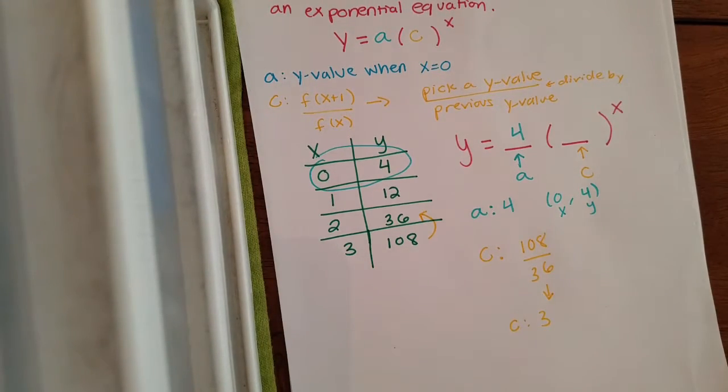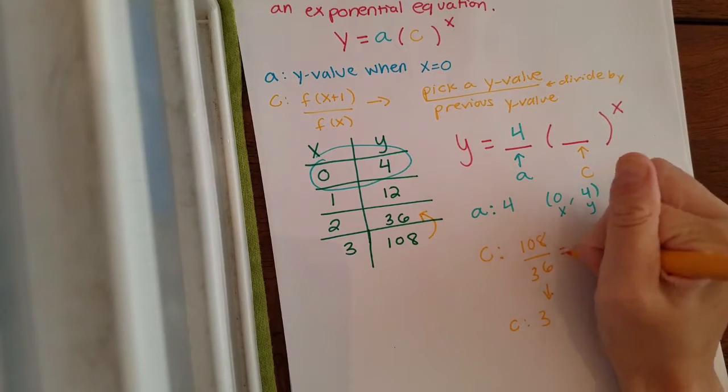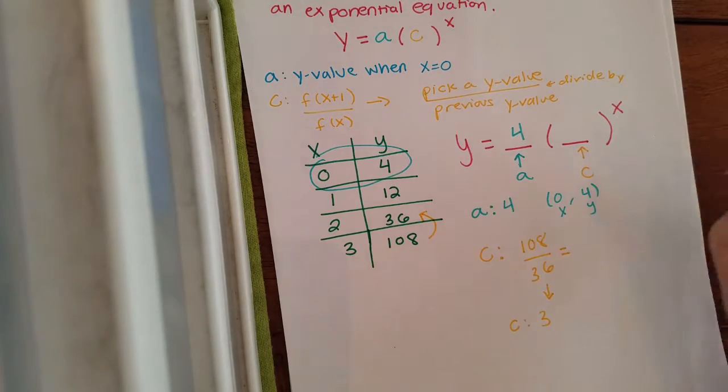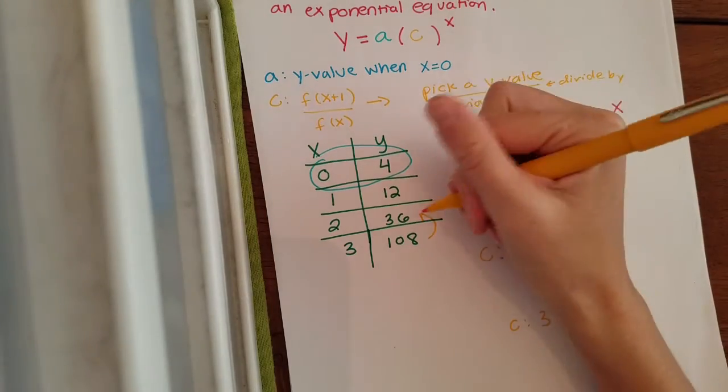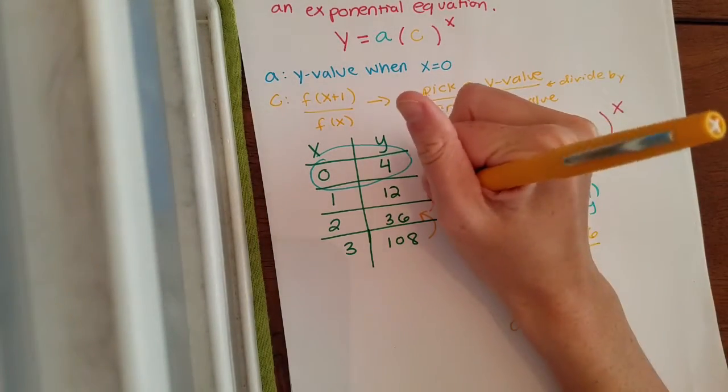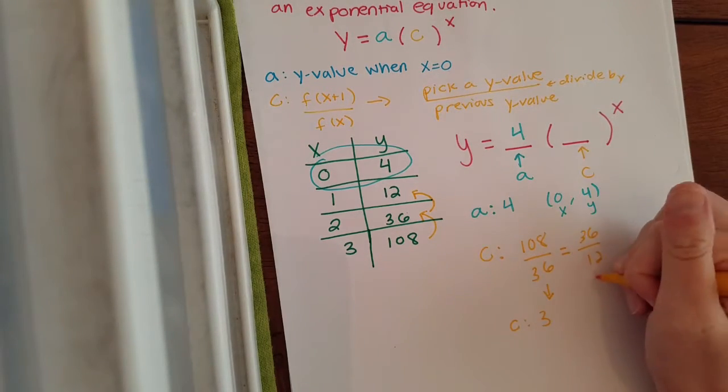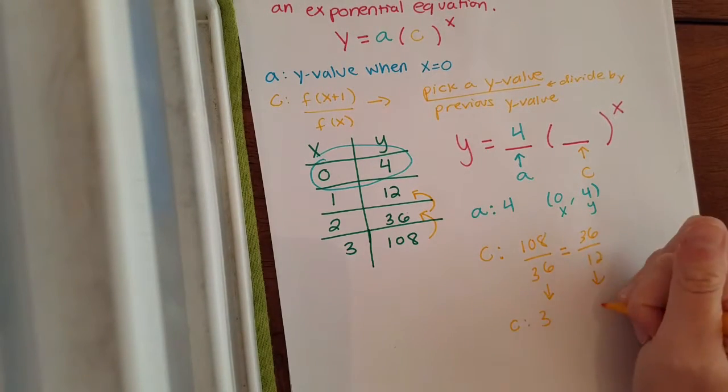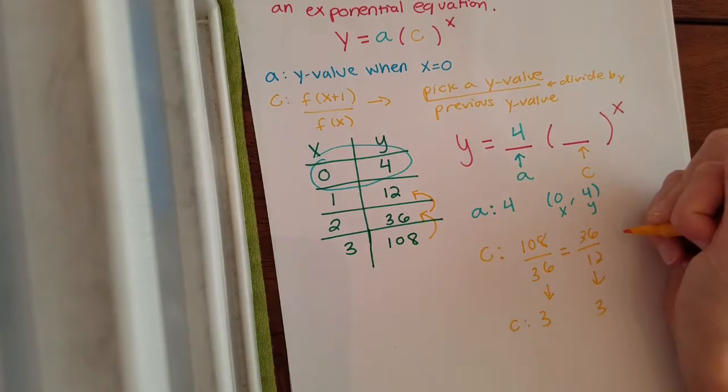3 times 36 will give you 108, which that should equal or be the same as you could pick another y value. If you pick 36 and you divide it by its previous y value, which is a 12, 36 divided by 12 will also give you a 3. Holy hot dog, that's exciting.